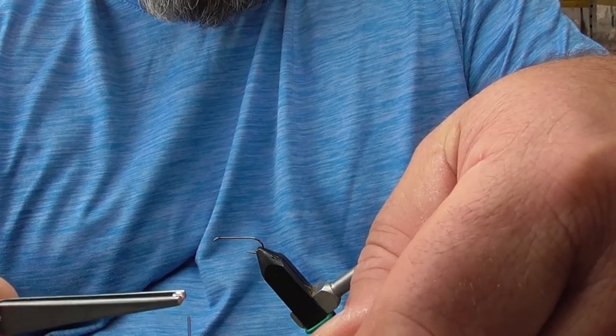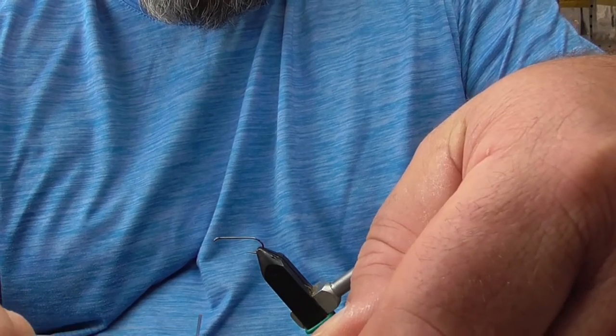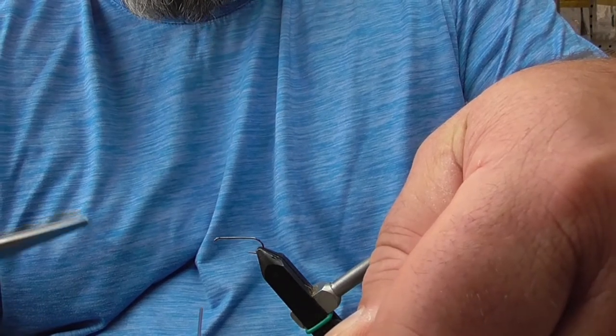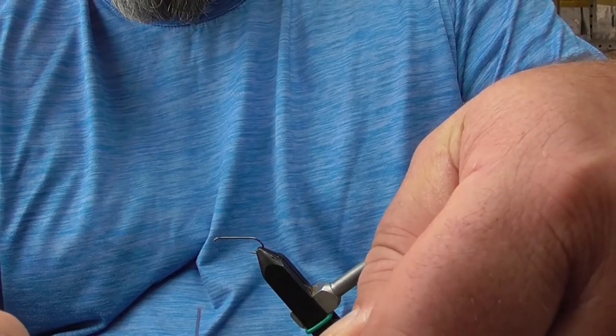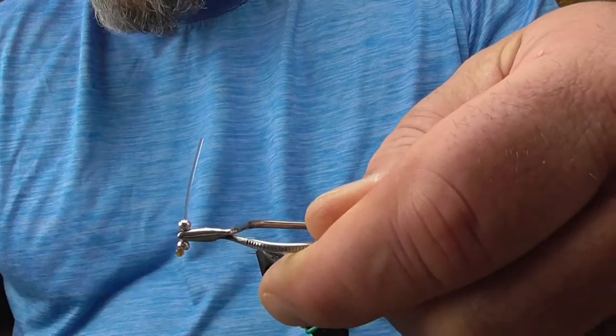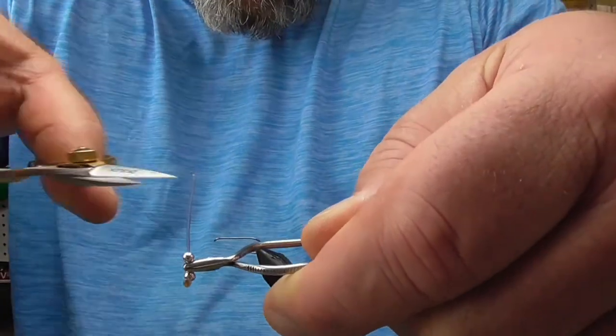I'm going to trim that off, leaving about an eighth, maybe a quarter inch of monofilament. Then I'm going to light this end and let that burn down.